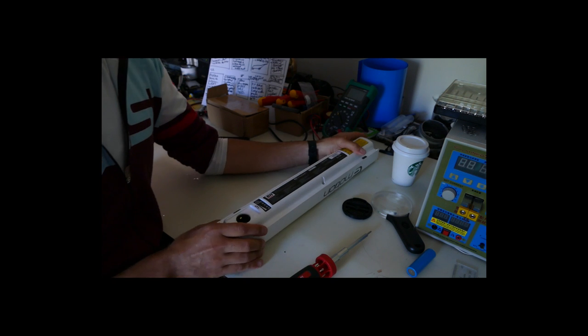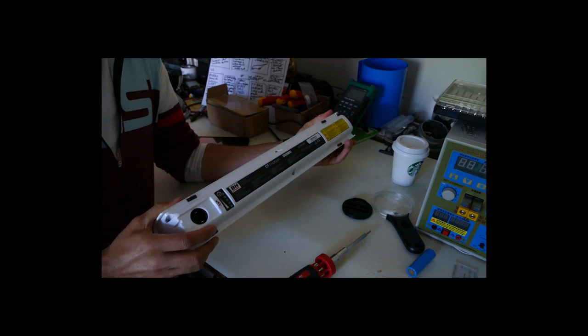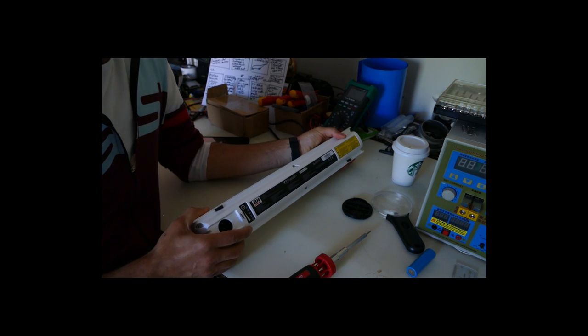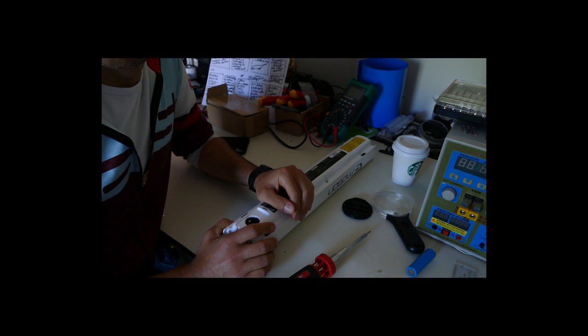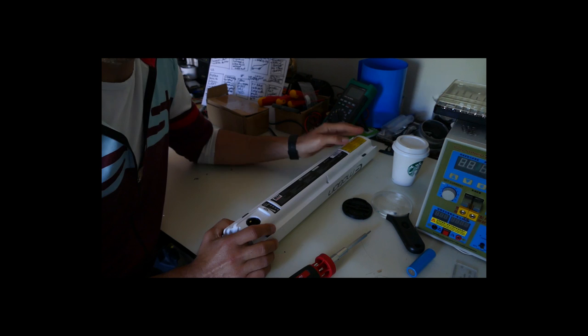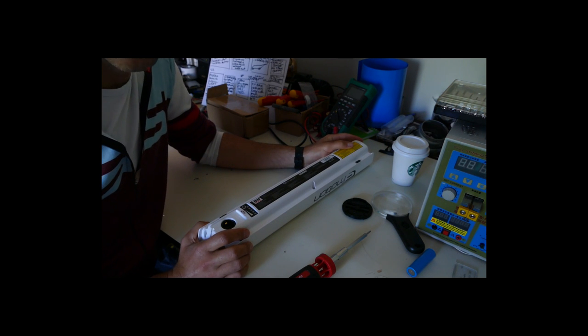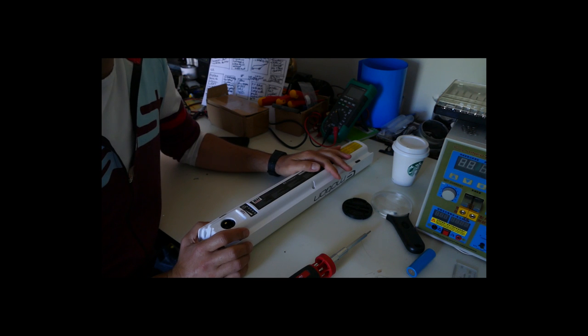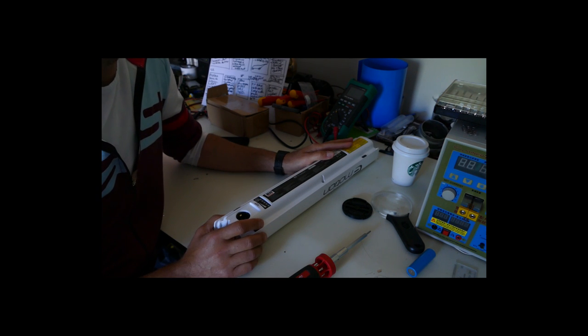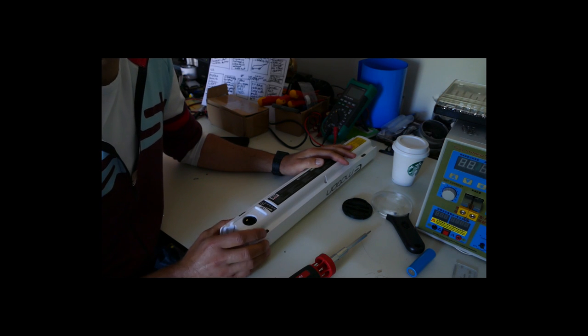This battery is 48 volts but only 9 amp hour. That lawnmower battery is 10 amp hour and I definitely don't want to go any less than that. I actually want to go a little bit above that. Let's open this thing up and see what type of batteries are in here.